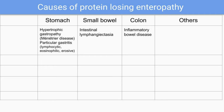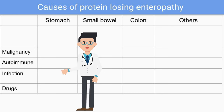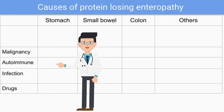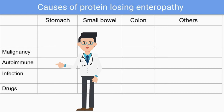Small bowel causes include intestinal lymphangiectasia, which can be further classified into primary and secondary, then inflammatory bowel disease. Professor then gives tips about different disease categories, namely malignancy, autoimmune, infection, and drugs.